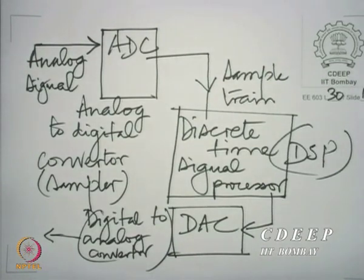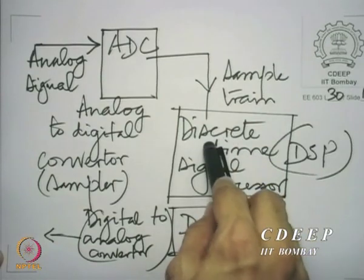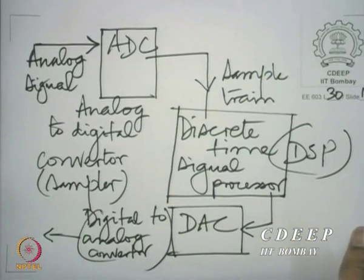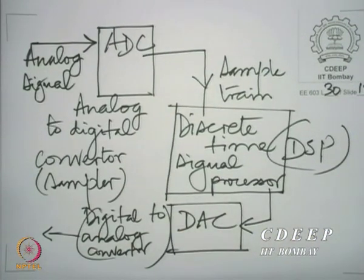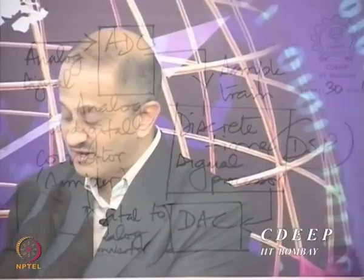That is the reason why discrete time processing is attractive. Although there is flexibility, there is also versatility — the same thing can do many different operations. But versatility is not without structure, so we need to put down a systematic process for translating a given system description to a realization. We will begin to do that today and continue in subsequent lectures.